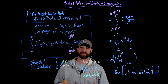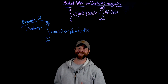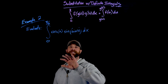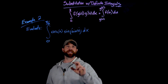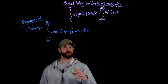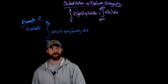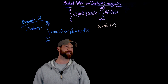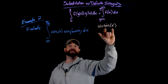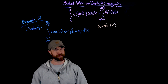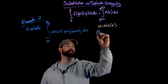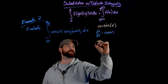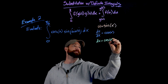In the second example we have cosine of x times the sine of sine of x. The substitution here is to let u equal sine of x — not just because it's the inner function, but also because its derivative, cosine of x, is already a factor in the integrand. Differentiating: d/dx of sine x equals cosine x, so multiplying over gives du equals cosine x dx.